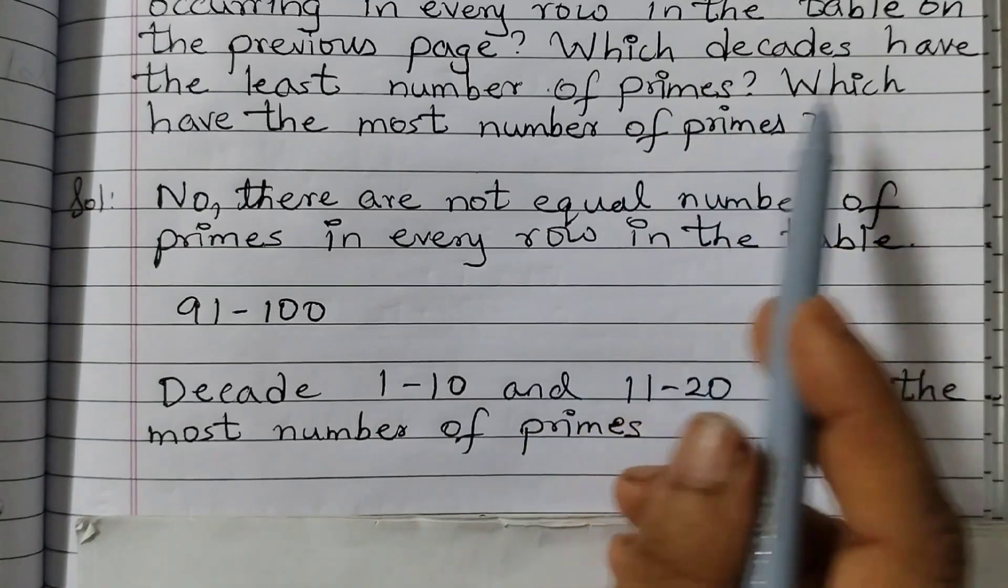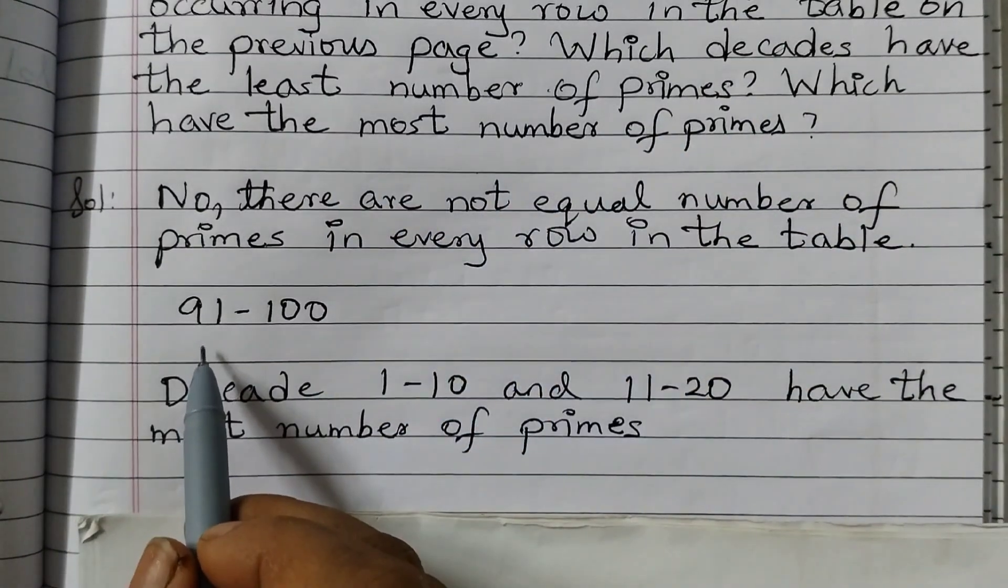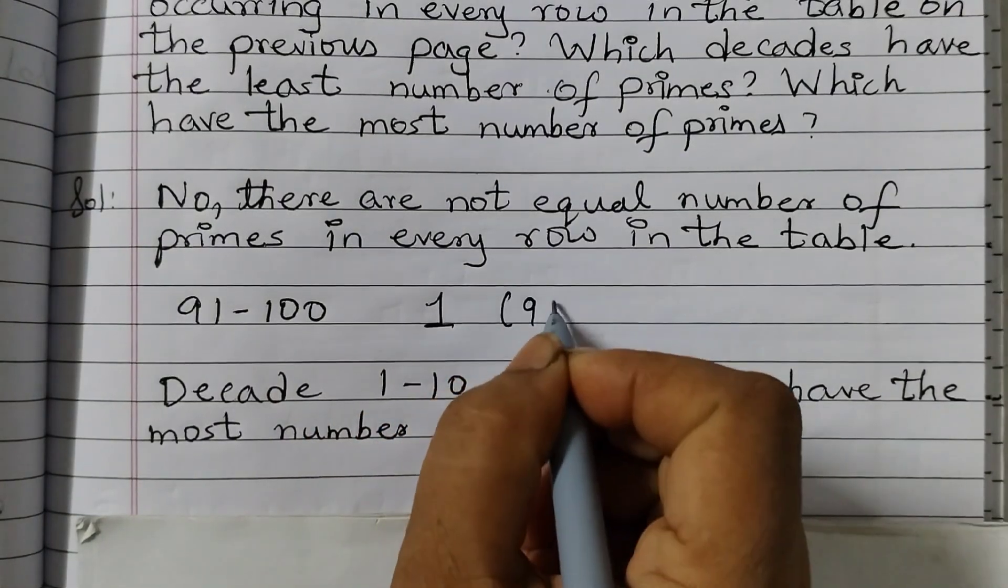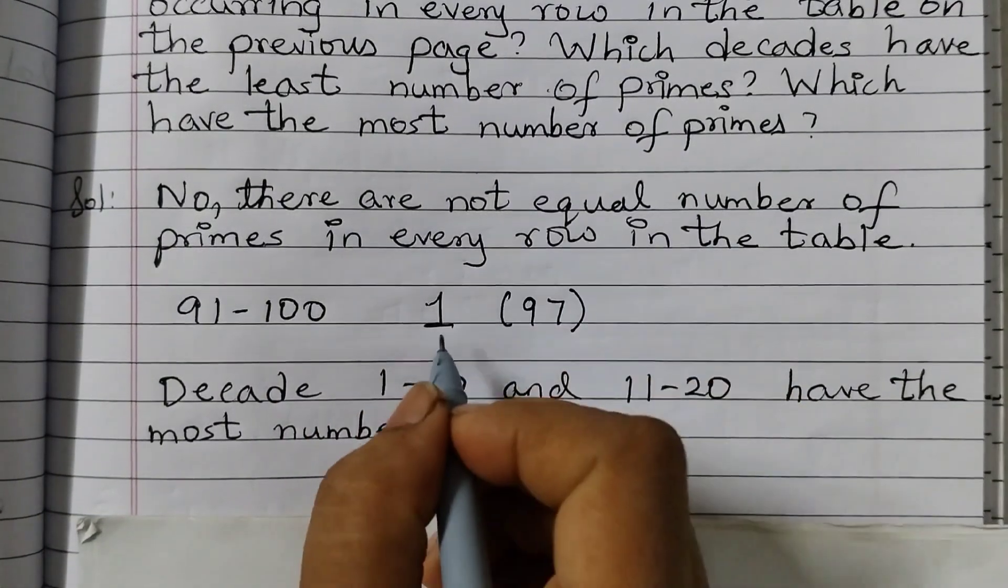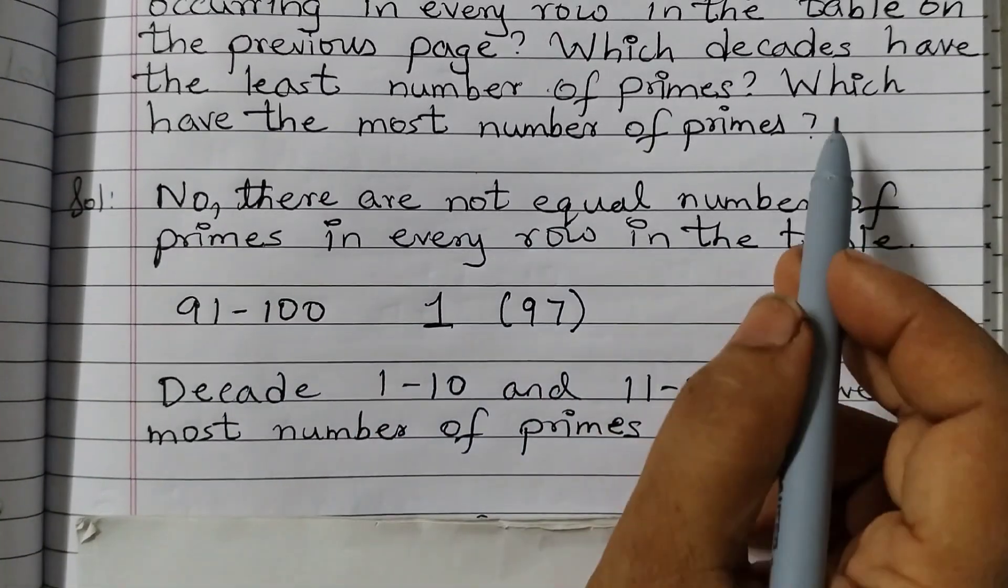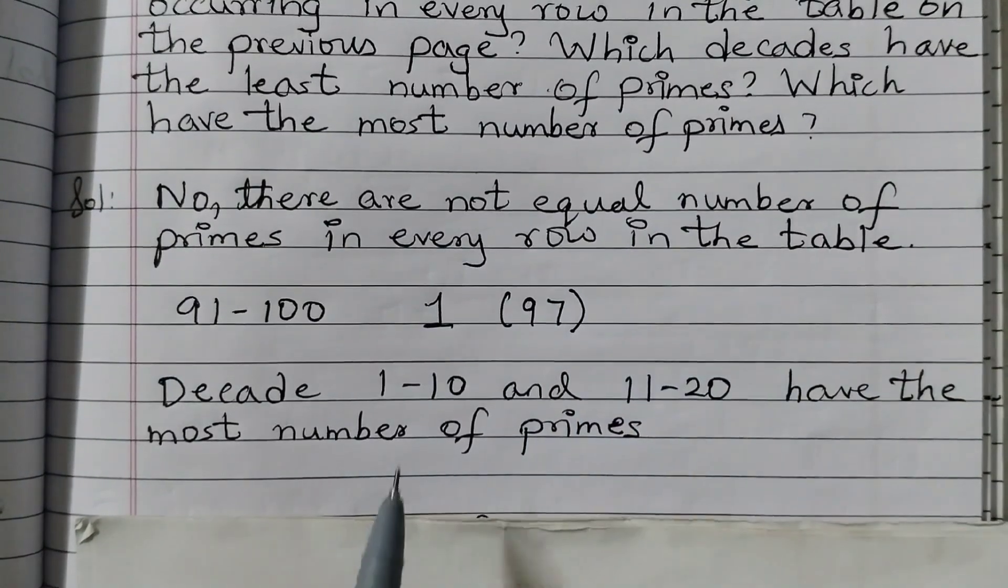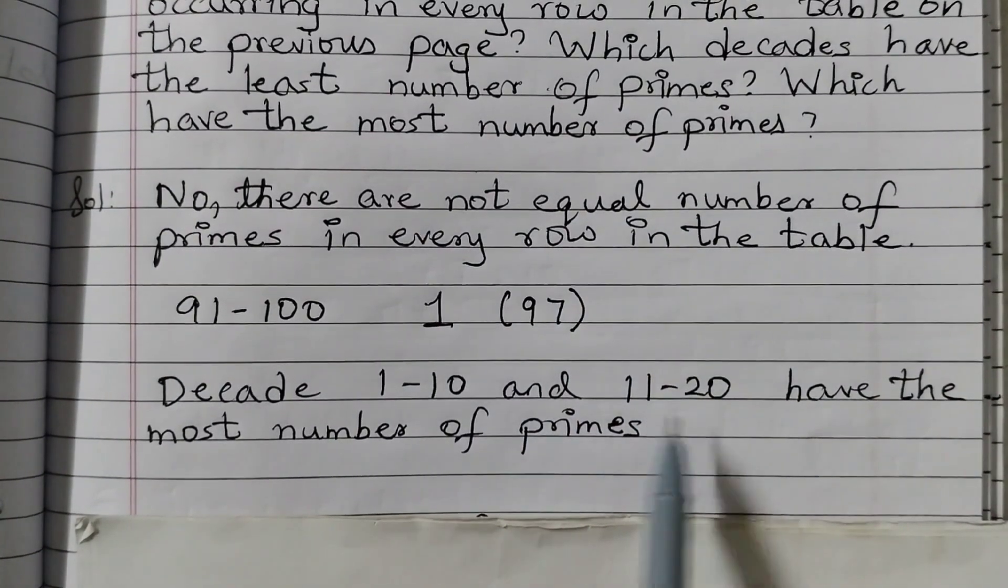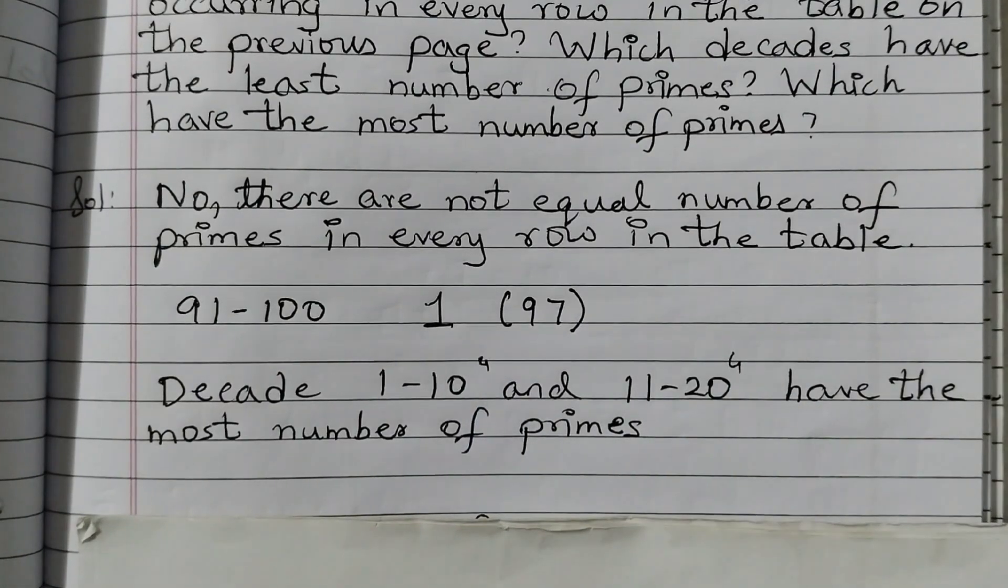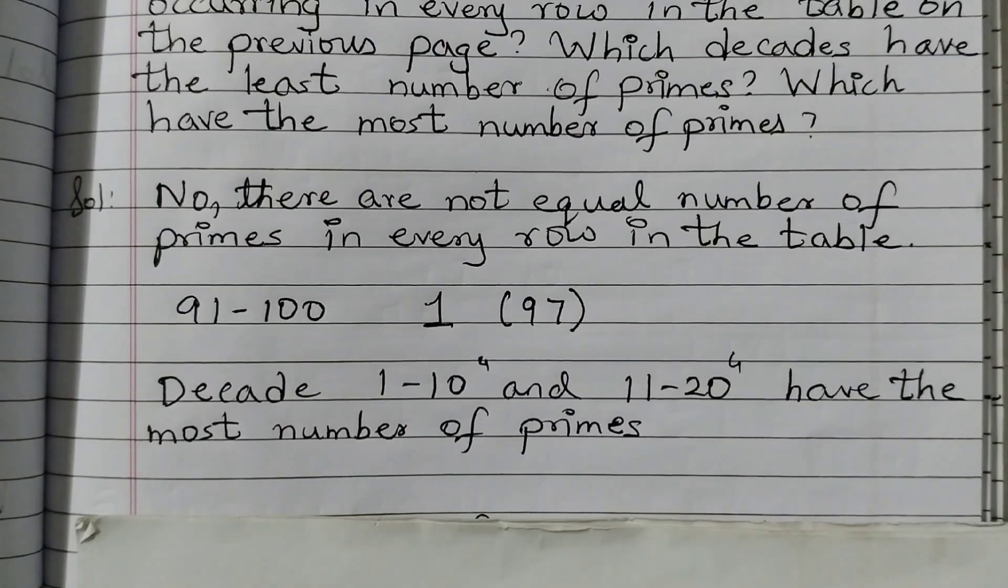Second part, which decades have the least number of primes? Decade 91 to 100 has just 1 prime number and that prime number is 97. And which have the most number of primes? Decade 1 to 10 and 11 to 20 each have 4. They have the most number of primes. That was question number 3.